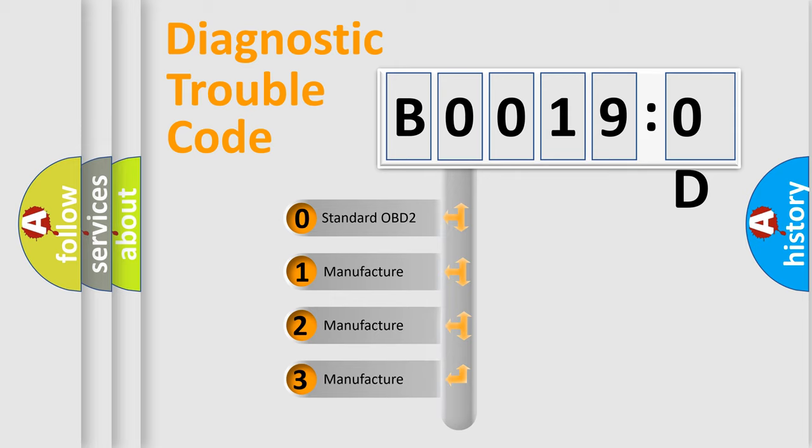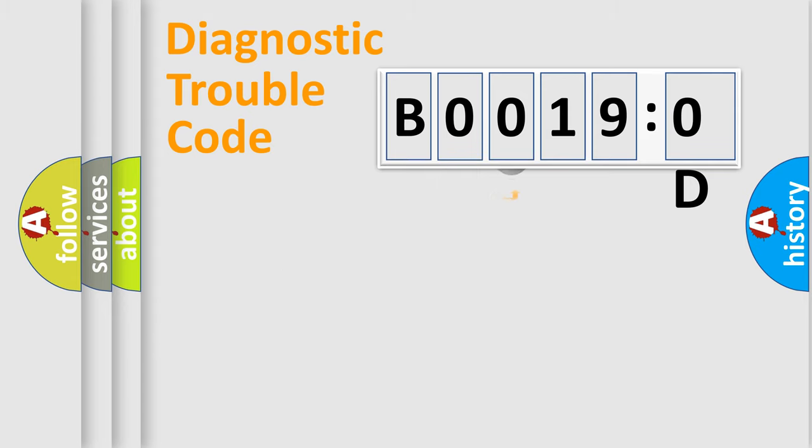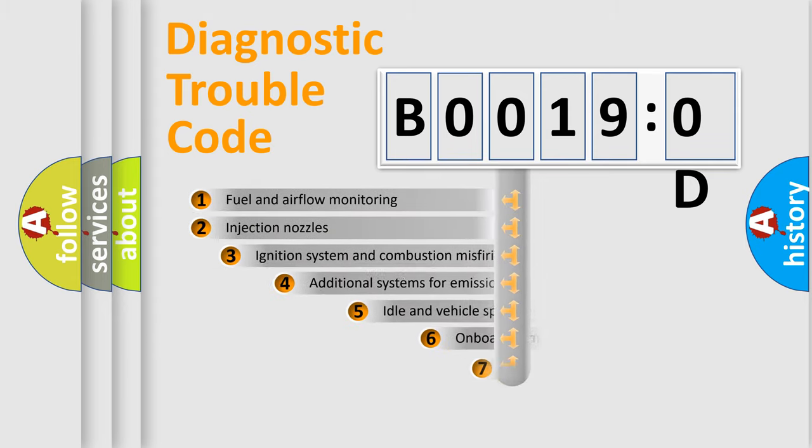If the second character is expressed as zero, it is a standardized error. In the case of numbers 1, 2, or 3, it is a more specific expression of the car-specific error.